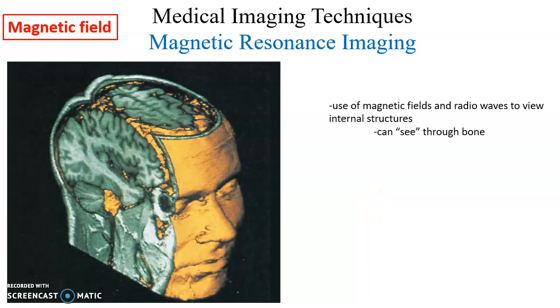Magnetic resonance imaging is similar to computed tomography in that a large machine images the body in three dimensions. However, it uses magnetic fields and radio waves rather than x-rays. MRI can see through bones more easily than a CT scan, and because it uses a magnetic field rather than damaging x-rays, it is much safer. That is it for Chapter 1.